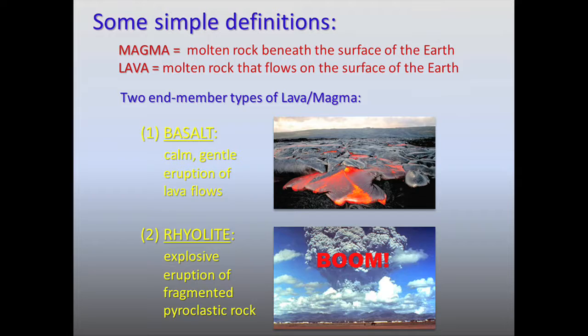Nobody dies — you can easily outwalk a basalt lava. But then you go to the other extreme, and you have highly explosive eruptions. These are associated with a compositionally different type of magma that we would call a rhyolite — very highly explosive, where material is rising high into the atmosphere, 10, 20, 30, 40 kilometers into the high stratosphere.